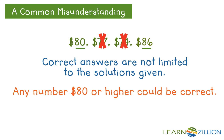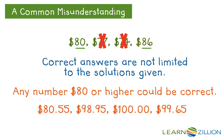Inequalities aren't limited to whole numbers either — they include all rational numbers. These numbers can include whole numbers as well as decimals or even fractions. For example, $80.55, $98.95, $100, or $99.65 are also possible solutions, and there could be more, as long as they are greater than or equal to $80.